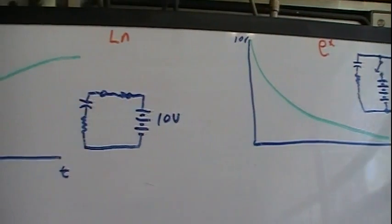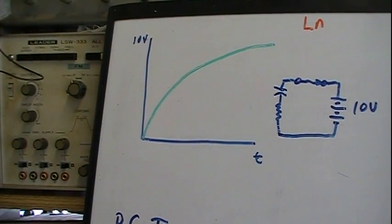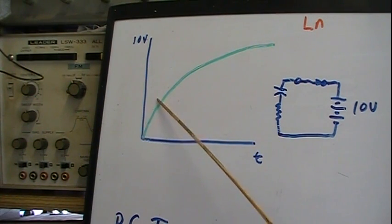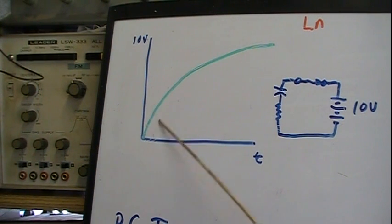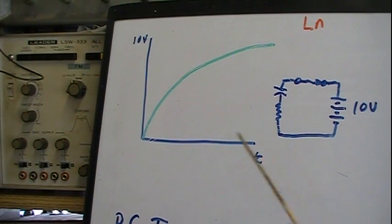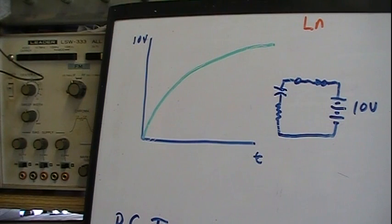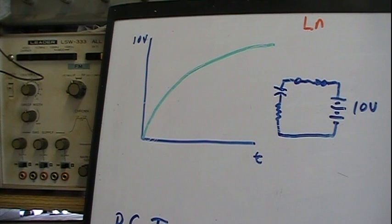Right now we're going to pay more attention to the lower area of the charge curve — where it's fairly linear. That's what we want: a fairly linear curve for our scanning and deflection circuits. If there's too much curve in it, your linearity is off. As long as this portion is fairly linear or straight, your linearity is good.